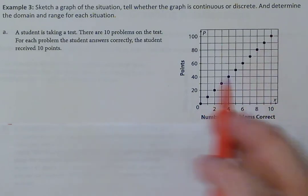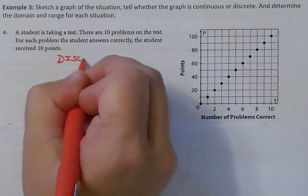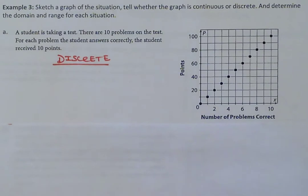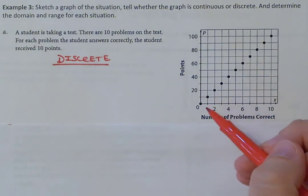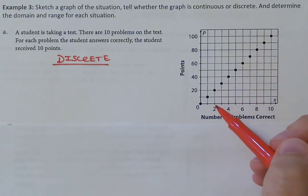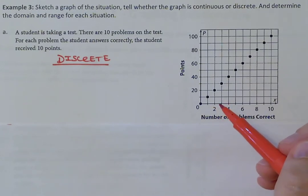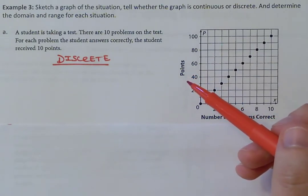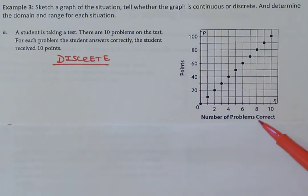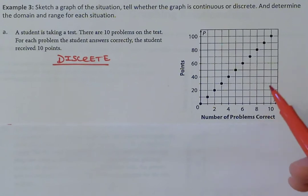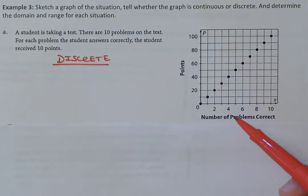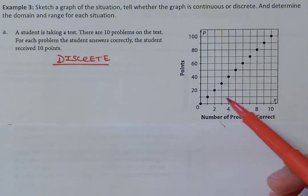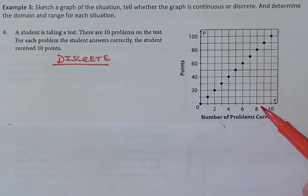This graph is discrete. Just by looking at it, it's not a connected line — it's a bunch of separate points. The other part that makes it discrete: can I have a partial number of questions correct? Think about multiple choice — you can't have part of a multiple choice question correct or not. So because you can't have a partial number of problems correct or incorrect, this situation is discrete.